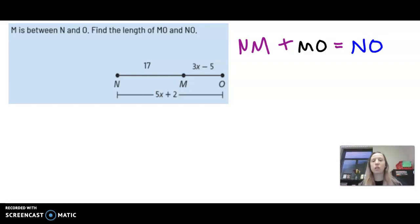So NM is 17 units plus MO, which is 3x minus 5 units, should equal the entire length NO, which is 5x plus 2.